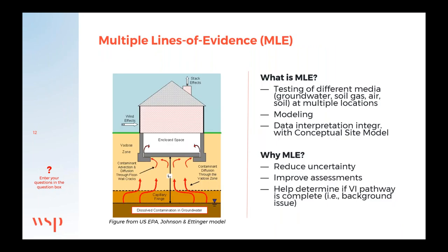At this site we used something called multiple lines of evidence — testing different media such as groundwater, soil gas, air, and soil at multiple locations. Not only one soil gas sample but maybe two at different depths, and the same for groundwater and so on. When you use this together with modeling of what the concentration should be, you can interpret all the data and build your conceptual site model of how the contaminant is distributed in the ground and how it transports to the receptors — the people in the building.